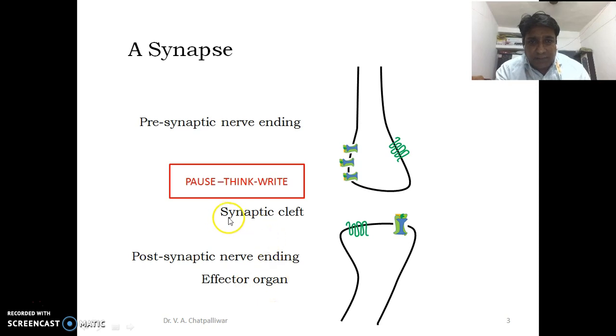The space in between the junction is called as synaptic cleft. It may also be called as extra neuronal compartment. It is filled with a fluid which is called as synaptic fluid.